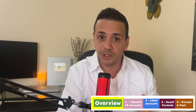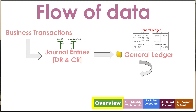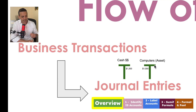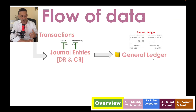Before we jump into the Excel file, I'm going to show you the flow of data in accounting so you understand where the trial balance falls within the accounting cycle. We begin with business transactions — for example, purchasing computer equipment for a thousand dollars, increasing assets and reducing cash. We record that in the form of journal entries as a debit and credit. From there, we record it in the general ledger, which is made up of accounts that summarize activity — one account for computers, another for cash.